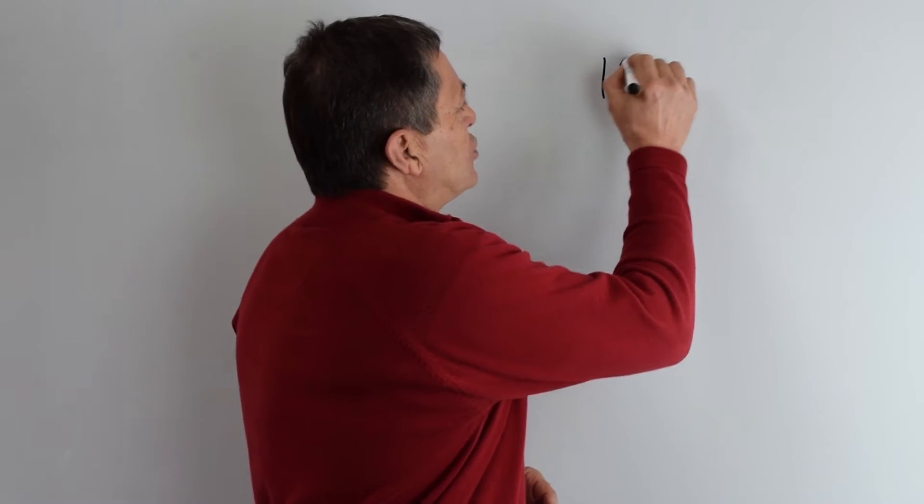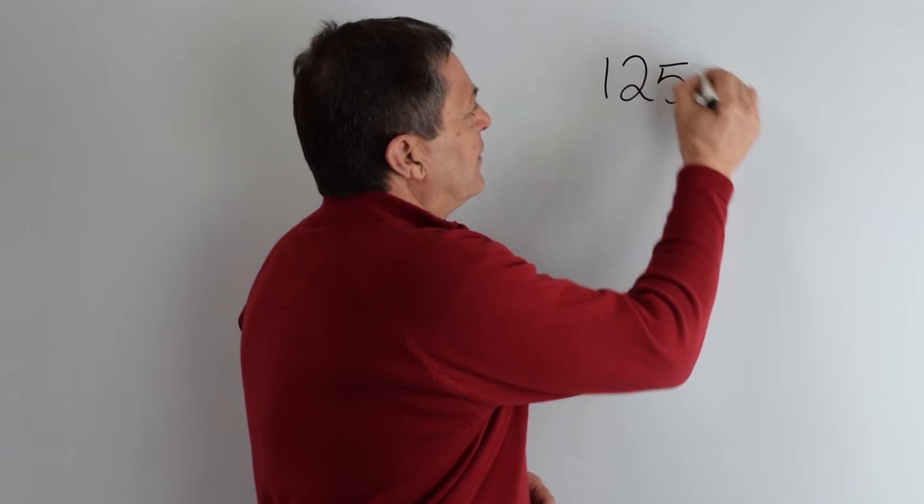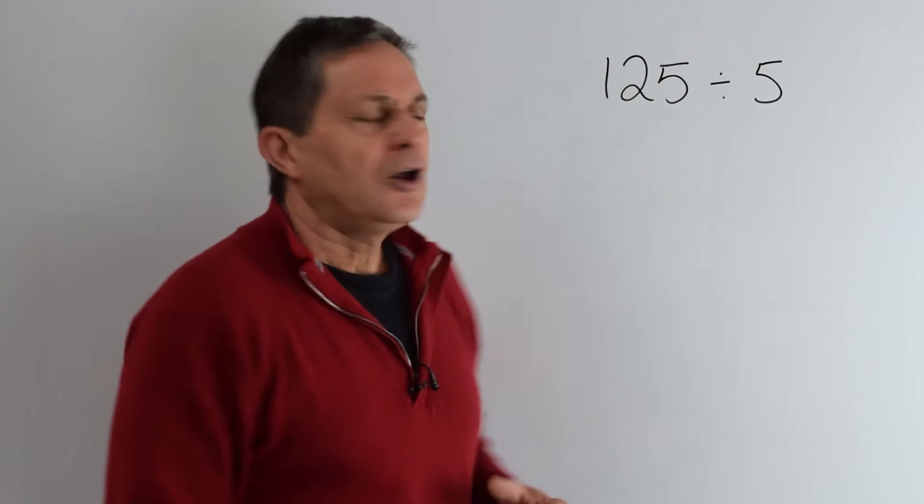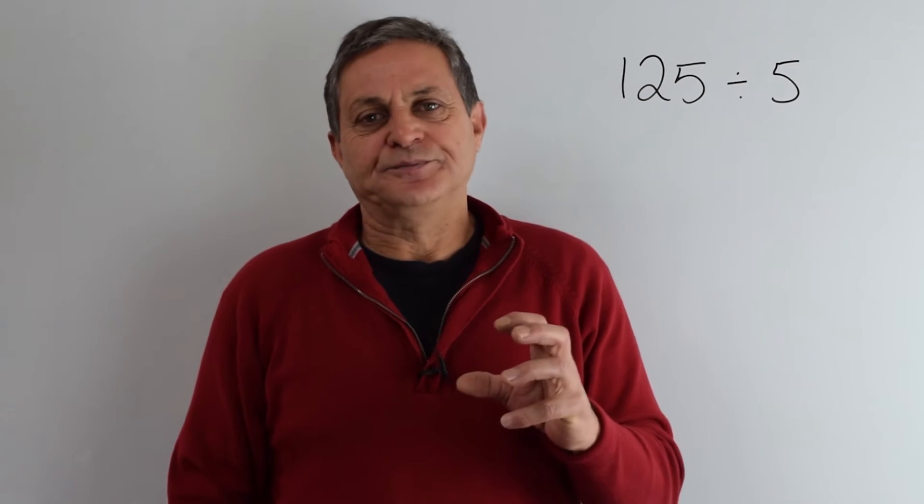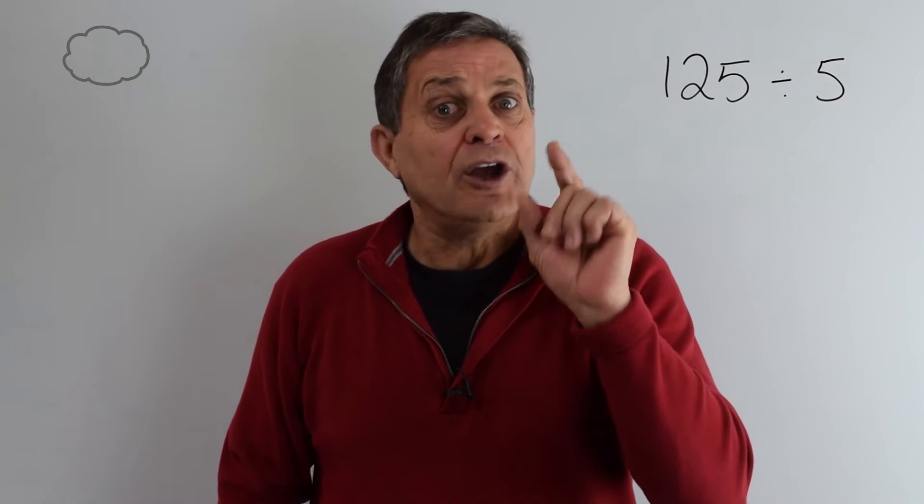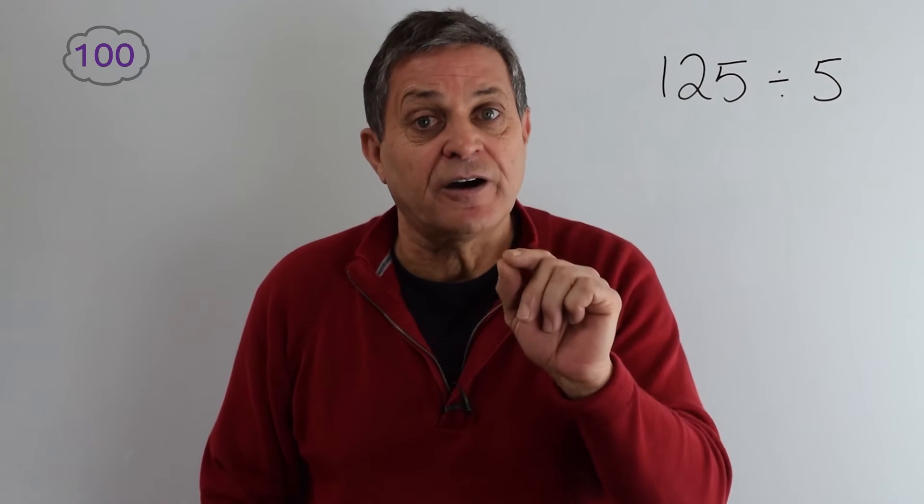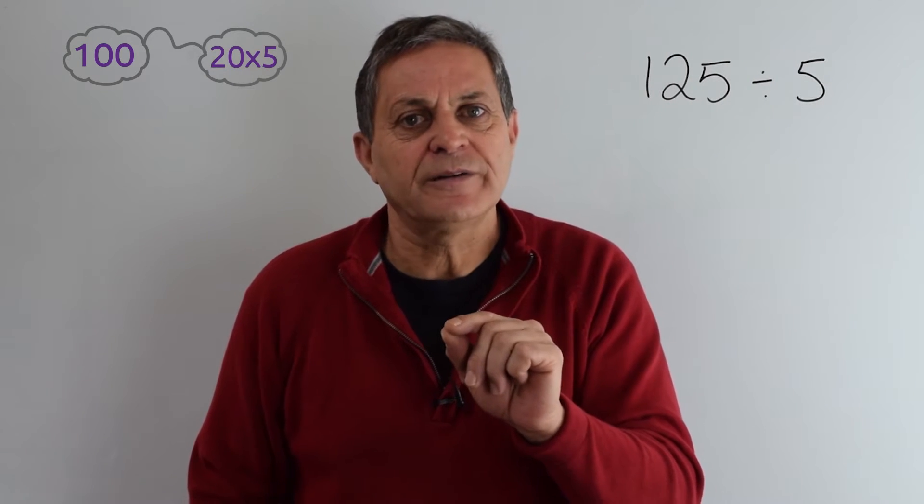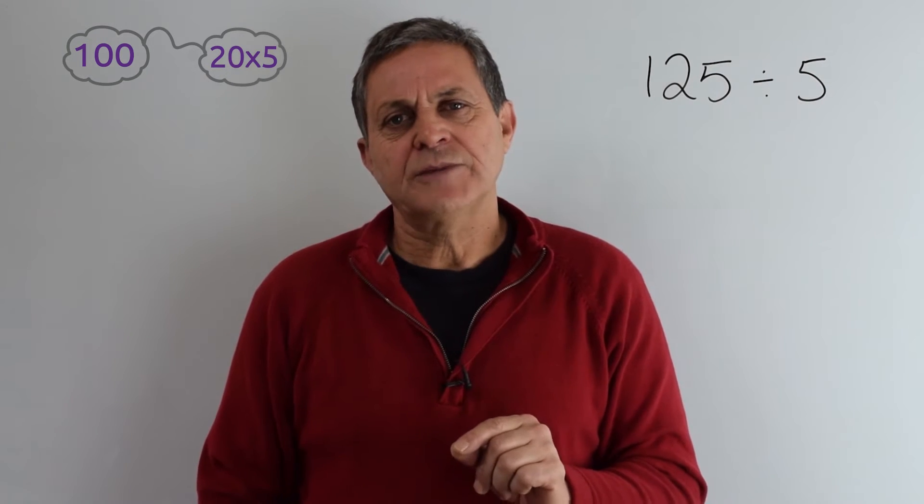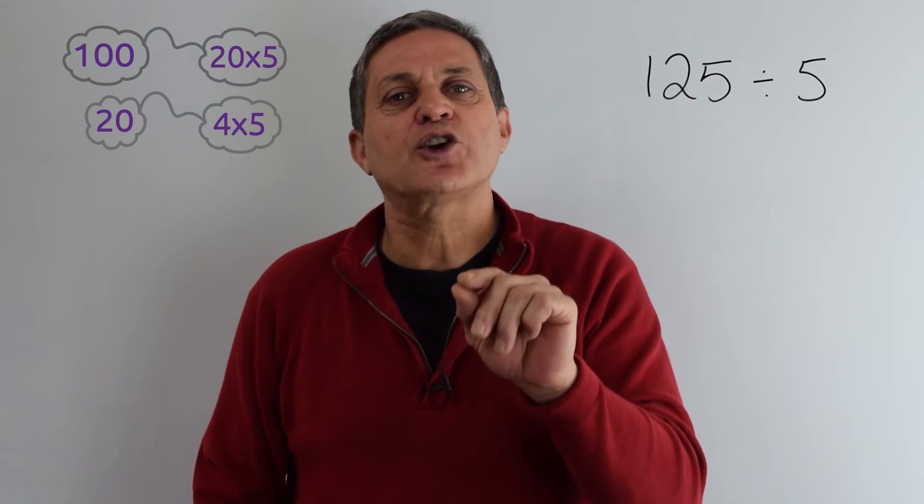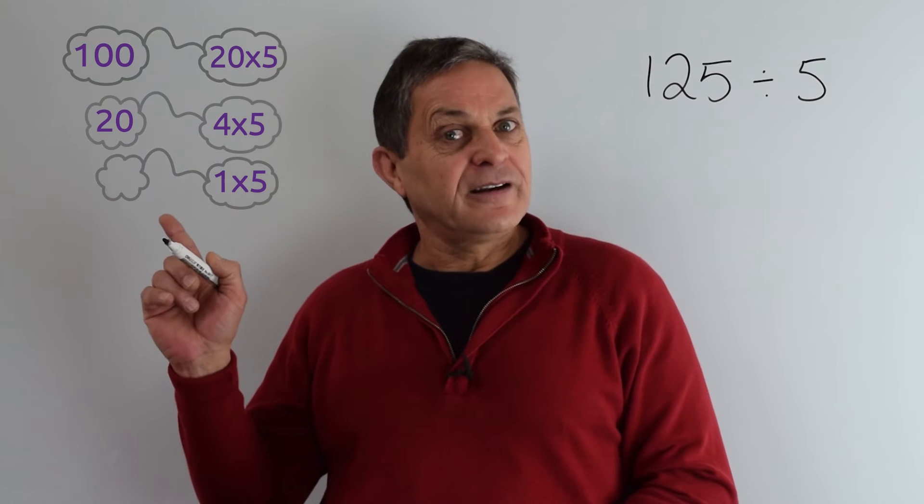If we take the number 125 divided by 5, we can start to chunk at it. We could say there's a hundred. Well, we know a simple multiple, 10 times 5 is 50, so 2 of those, 20 times 5, is 100. Then we know 4 times 5 is 20, and we also know 1 times 5 is 5.